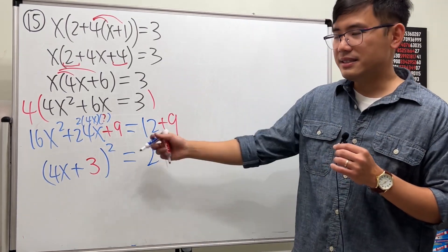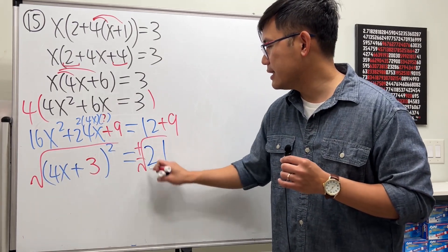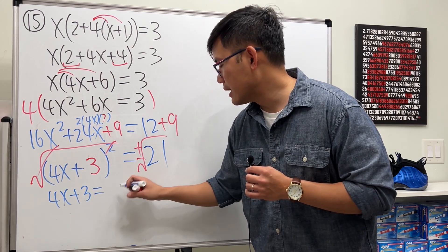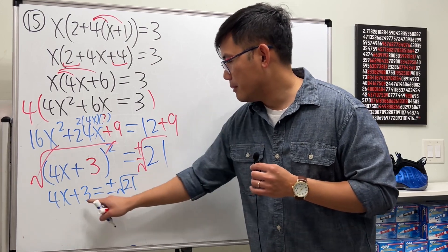And ladies and gentlemen, we can solve it now by taking the square roots on both sides. Cancel this, this is 4x. This is 4x plus 3 equals plus or minus √21.